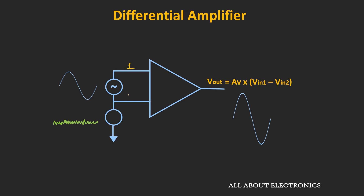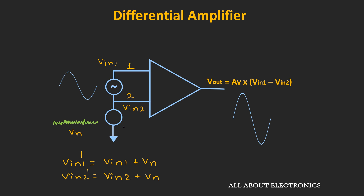Let's say these are the two input terminals of the differential amplifier. Vin1 is the input to the first terminal with respect to ground, and Vin2 is the input to the second terminal with respect to ground. Here, Vin is the noise which is common to both input terminals. With the noise, the input at the first terminal is Vin1' = Vin1 + Vin. Similarly, Vin2' = Vin2 + Vin. The differential input between the two terminals, Vd = Vin1' − Vin2' = Vin1 − Vin2.